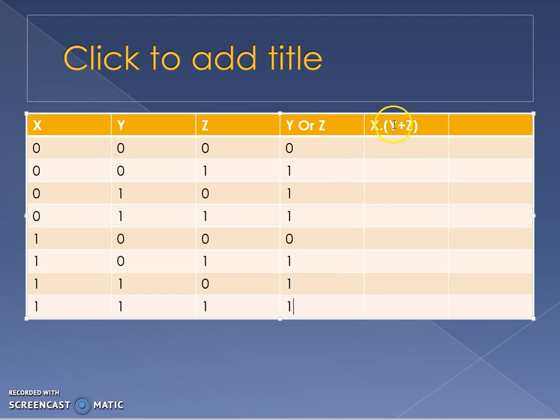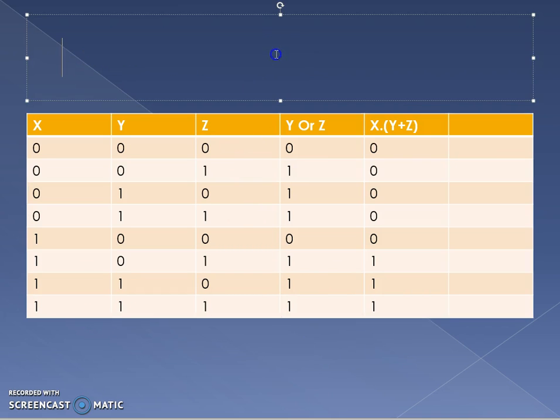Next thing we're looking at is X and Y or Z. Well, here's Y or Z. So it's X and this. Zero and zero is zero. Zero and one, zero. Because remember, an AND you've got to have them both as ones. Zero and one, zero. Zero and one, zero. One and zero, zero. One and one, one. One and one, one. One and one, one. And that is the truth table answer.